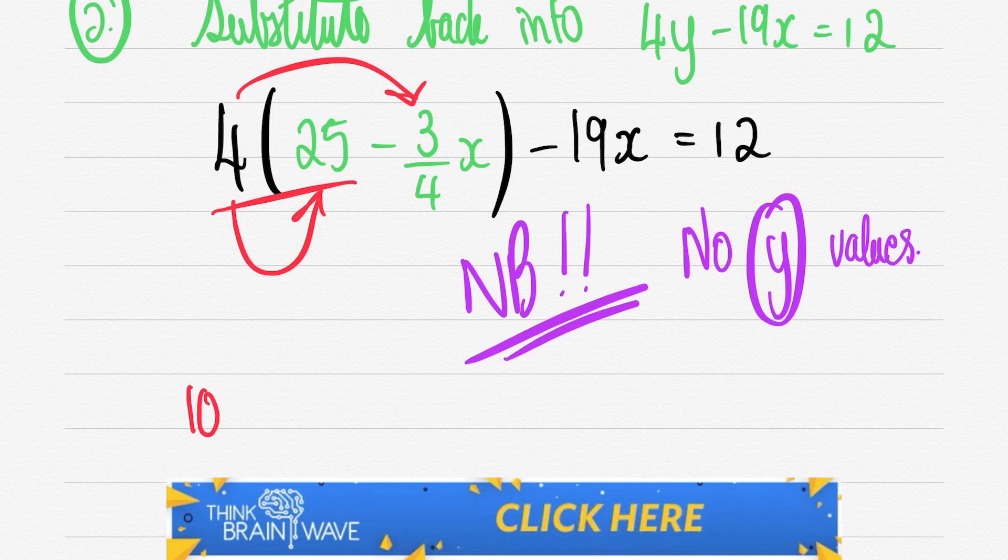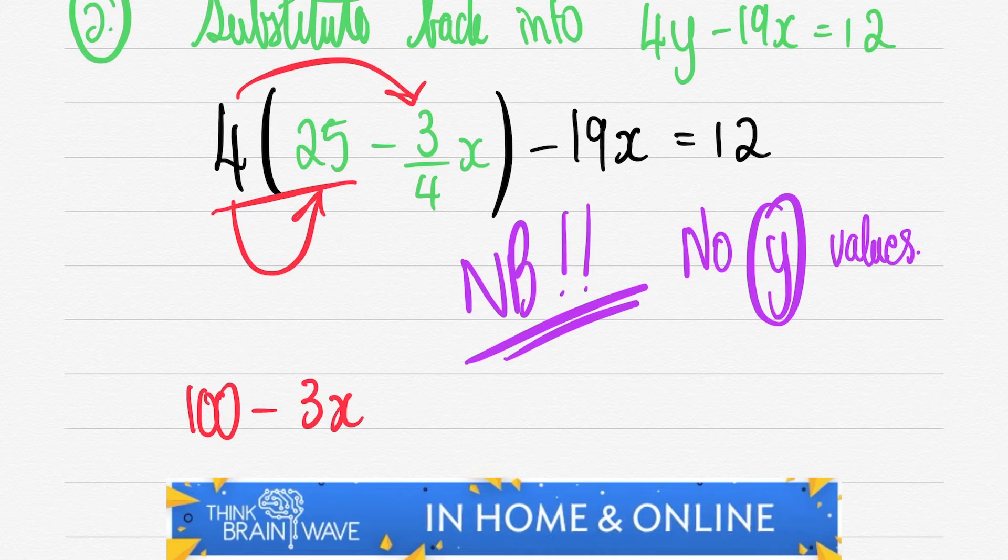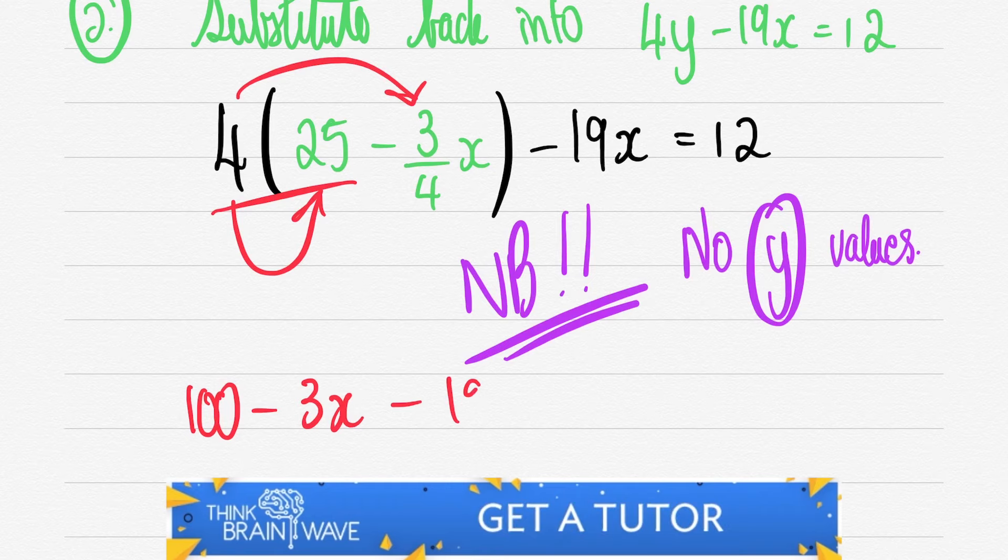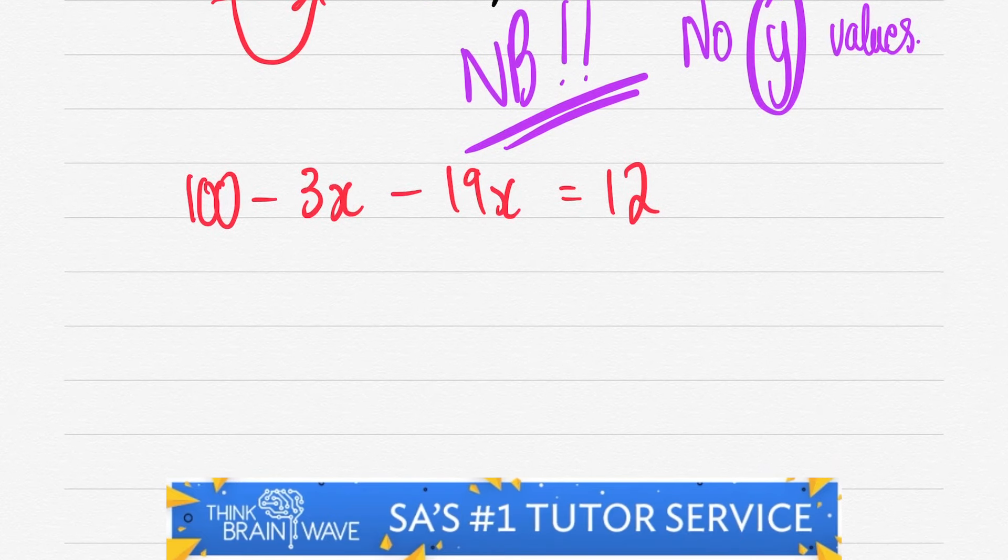So we multiply this 4 in. We have 4 × 25 = 100. When you times 4 and 3 quarters the 4s cancel and you're left with -3x. You then carry the -19x down making no change to the sign. The reason for that is that it has not crossed the equal sign. Bring your 12 down and once again no change to sign.